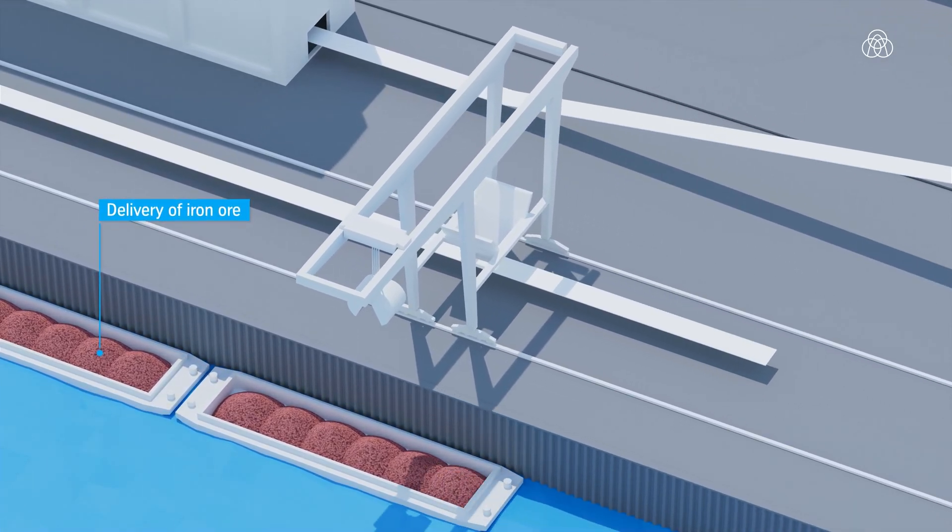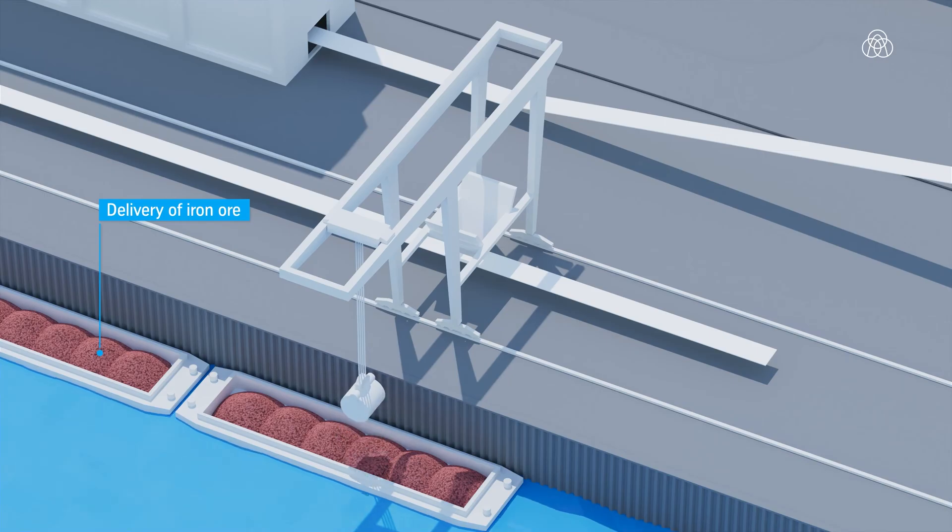Iron oxide pellets and lump ore are delivered via the ports of Walzum Süd and initially kept in the raw material stores for a temporary period.